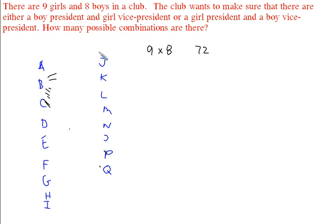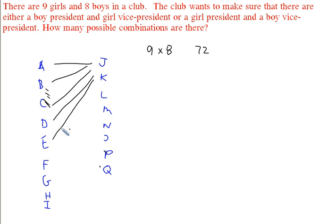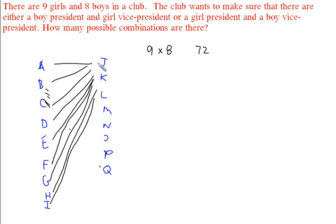Now, the other part of the problem: what if a boy wins the presidency? In that case, there would be 9 possible girl vice presidents. So for each of the 8 boys, there are 9 possibilities — that's 8 times 9, which also equals 72. Adding them together: 72 plus 72 equals 144 total combinations.